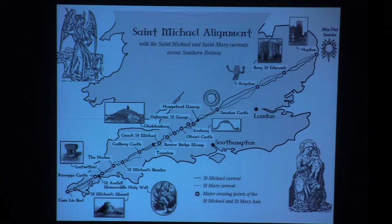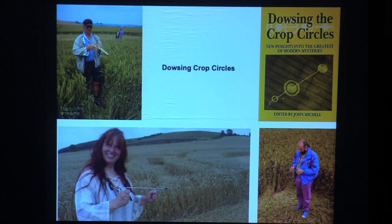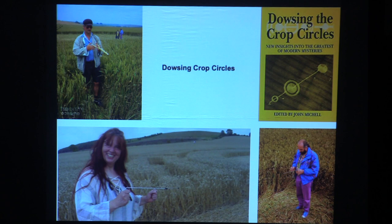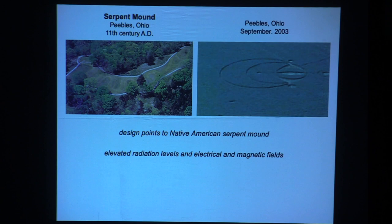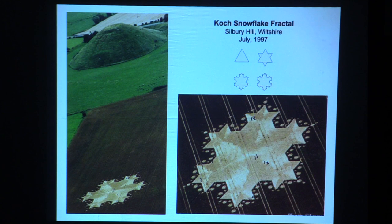People do go out and dowse crop circles — this fellow named John Mitchell edited the book Dowsing the Crop Circles. Now going to the United States to assure you that yes, they do happen here. One formation is near a Native American sacred site — a serpent mound from the 11th century AD — and elevated radiation levels and electric and magnetic fields were determined in that formation.